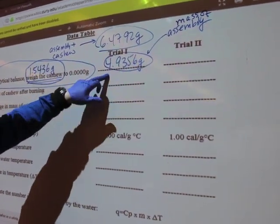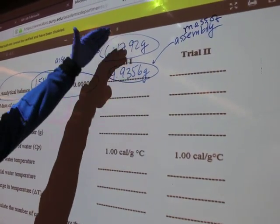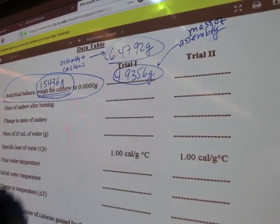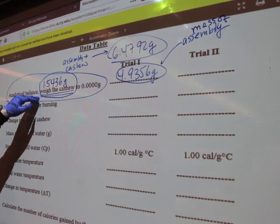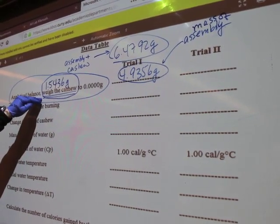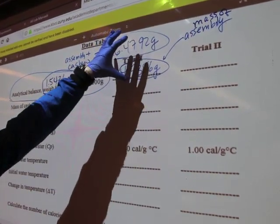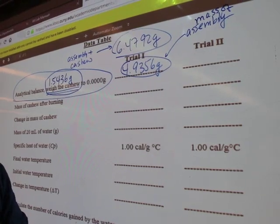I measured the assembly plus the cashew at 6.4792 grams. I determined the weight of the assembly by itself, so the difference between the two gives me the mass of the cashew, because there was no space to put both masses.